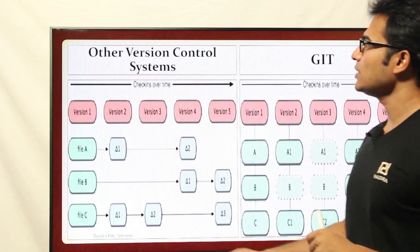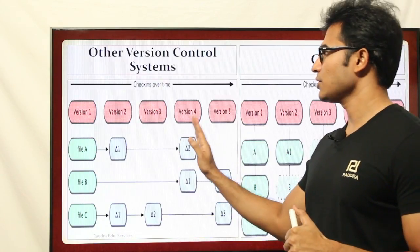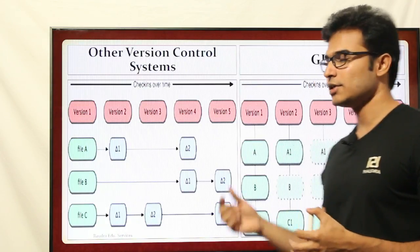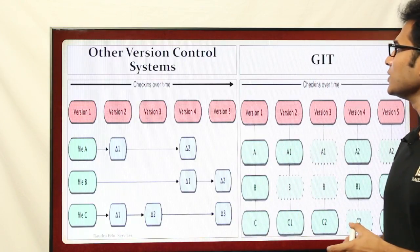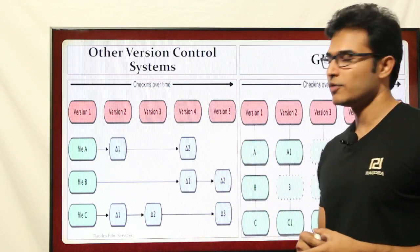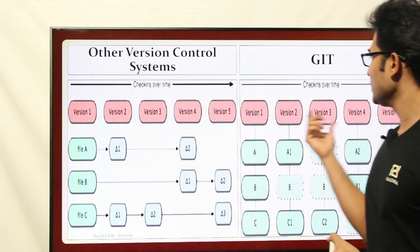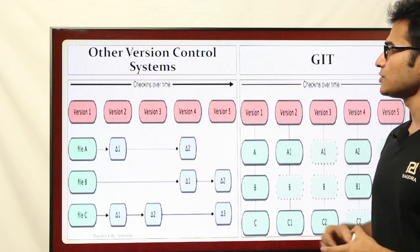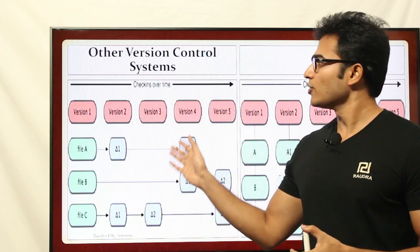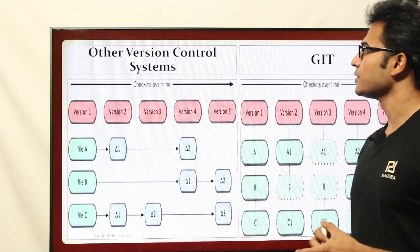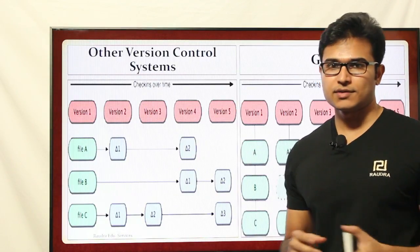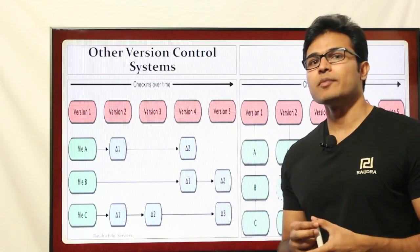Coming to the differences between other version control systems and Git — there are various other version control systems, but Git is the most widely used. You have SVN, BitKeeper, and many others. Let's see what the differences are. I'm not saying disadvantages or advantages — what are the differences — so everyone has their own implementations.